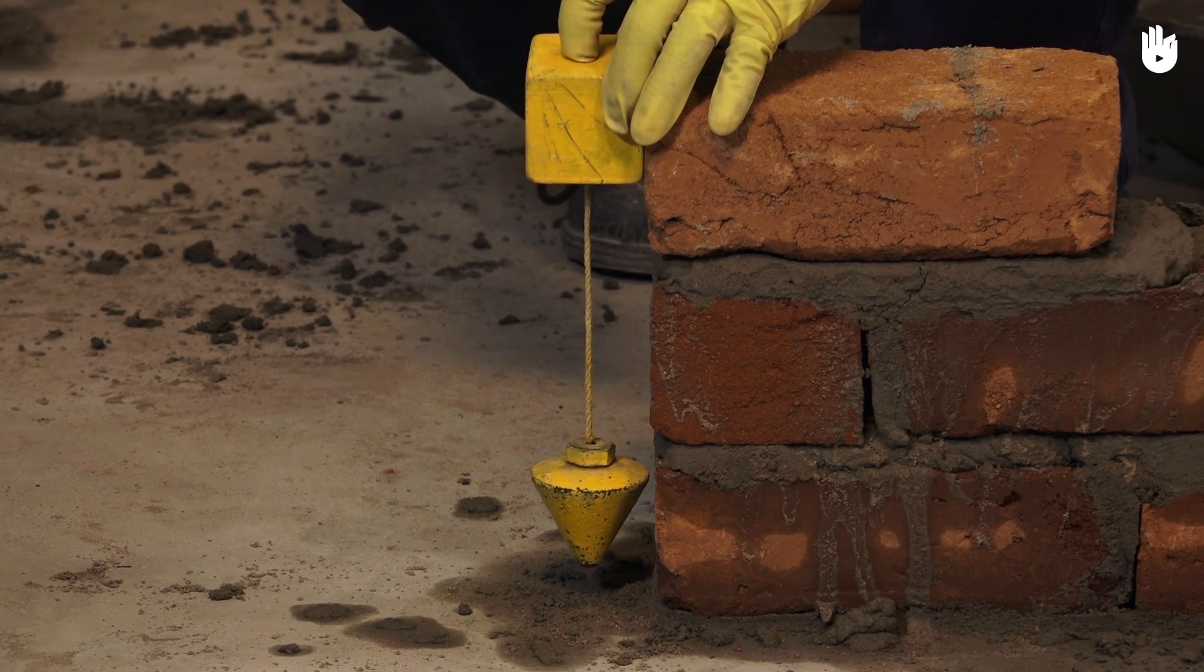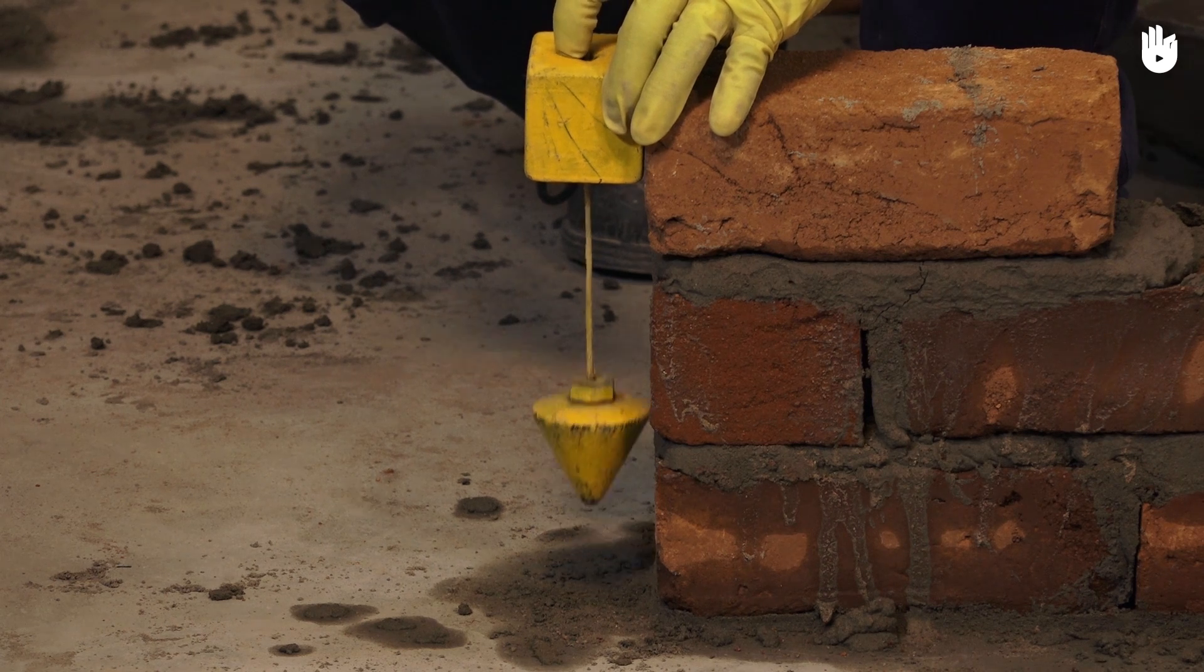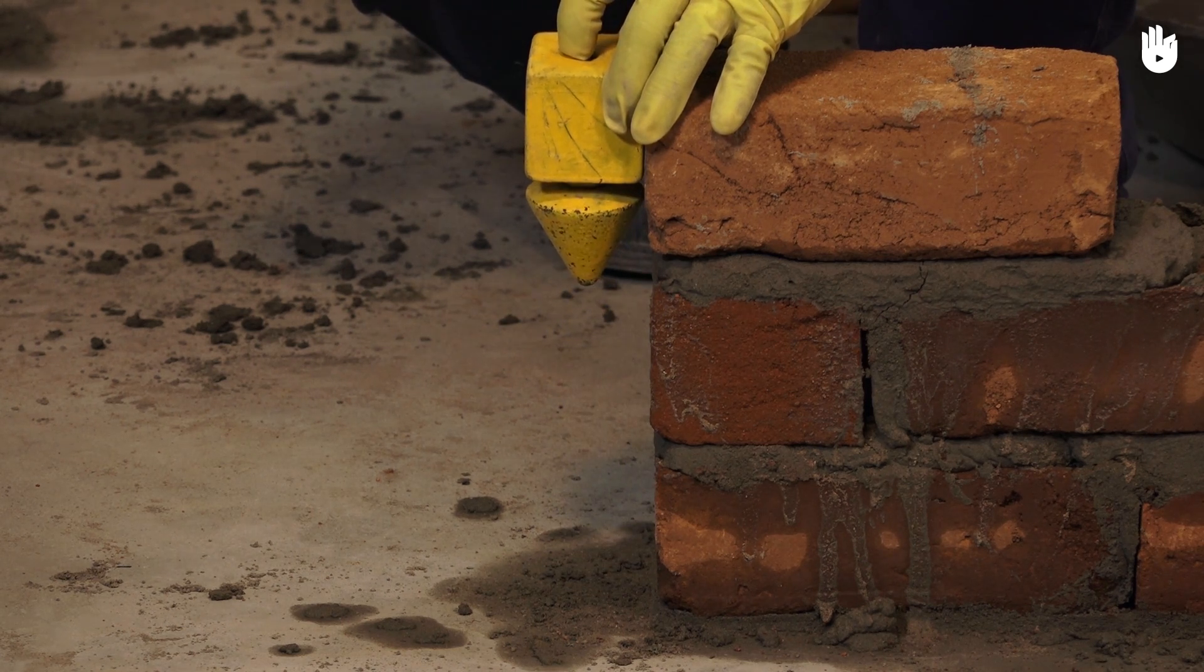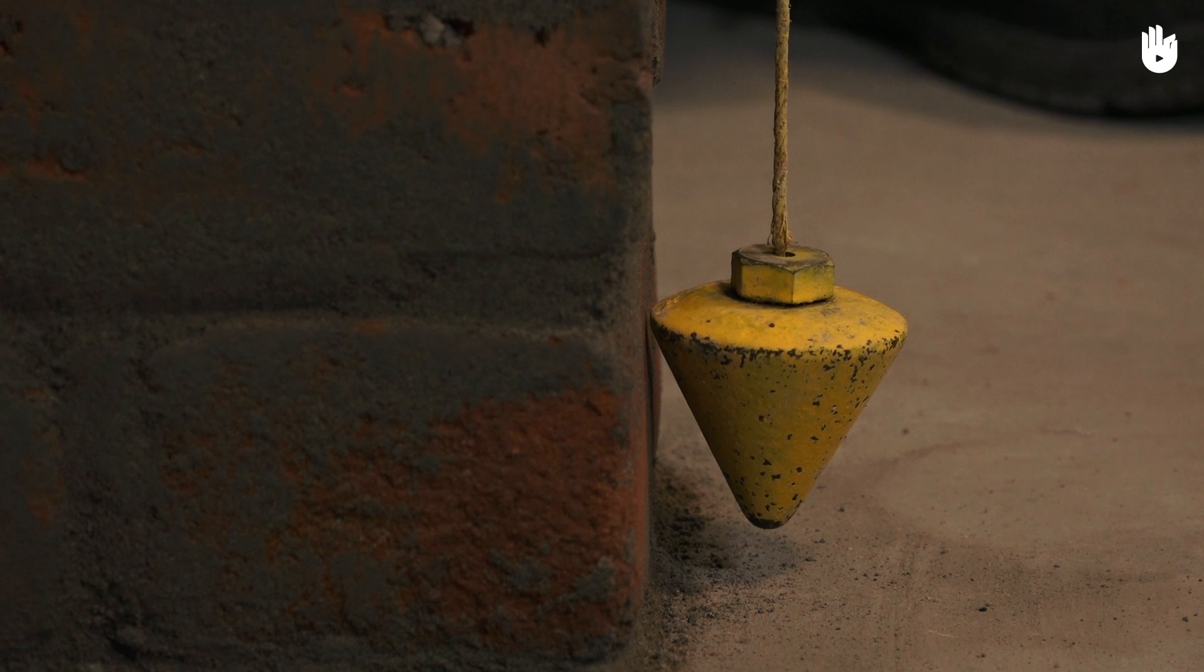Ensure that the plumb line is undisturbed and parallel with the surface. The bob should neither rest on the surface nor be set apart from it.